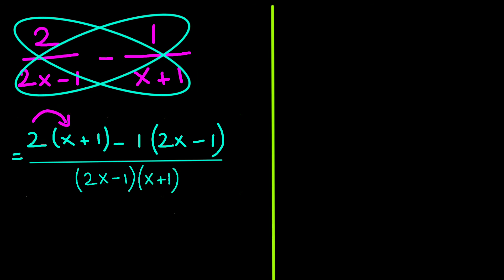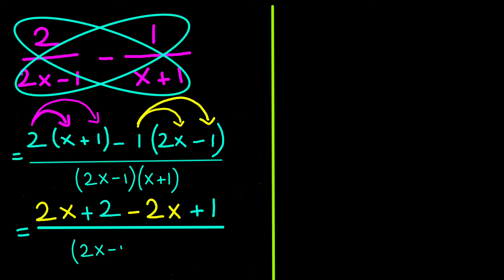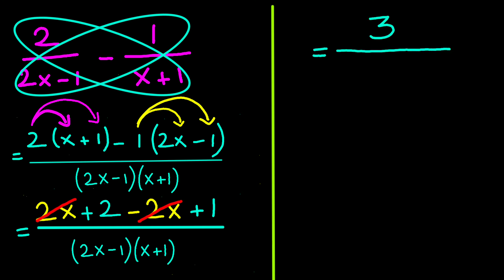Let's multiply: 2 times x gives 2x, and 2 times 1 is positive 2. Then negative 1 times 2x is negative 2x, and negative 1 times negative 1 is positive 1, all divided by (2x minus 1)(x plus 1). Here positive 2x and negative 2x are like terms and cancel out. We have 2 plus 1, giving us 3 divided by (2x minus 1)(x plus 1) as the solution.